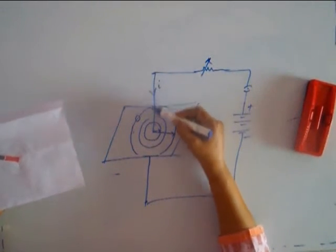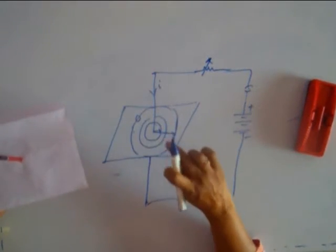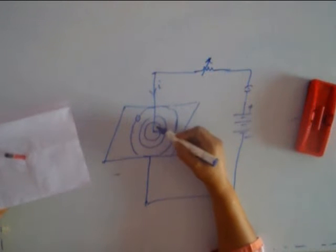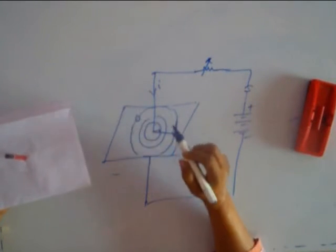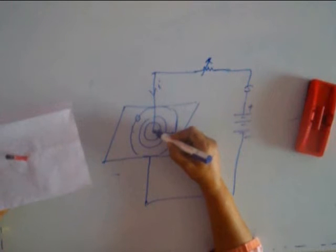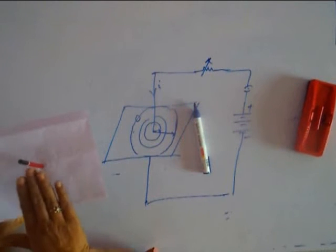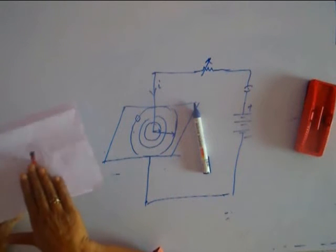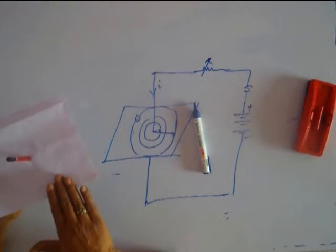You see the current is flowing in this direction and you will find, after you tap the iron filings, that the filings arrange themselves in concentric circles. The center of the circles lies on the wire, and these lines will be in the same plane of the cardboard. It's not that one circle will be up and another circle will be down.